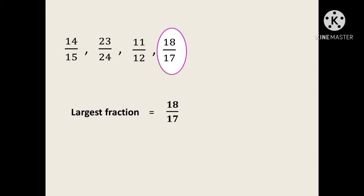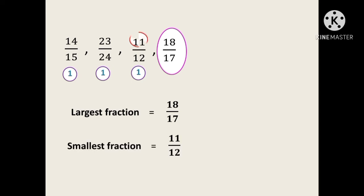Now we have 3 remaining proper fractions. Find the difference between the numerator and denominator in these fractions — the difference is 1 in all cases, so we have the same difference. To find the smallest fraction among the proper fractions, find the smallest numerator. The smallest numerator is 11, so the smallest fraction is 11 by 12. That covers Type 2.